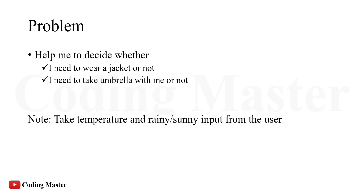In this lecture I need to decide what to wear. If it is cold I will have to wear a jacket, and if it is rainy I will have to take an umbrella with me. We can take input from the user — what is the temperature outside, and is it raining outside or not — and based on that input we will decide.